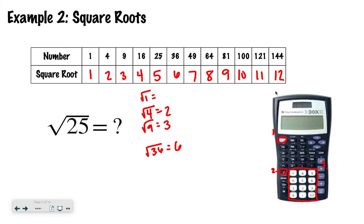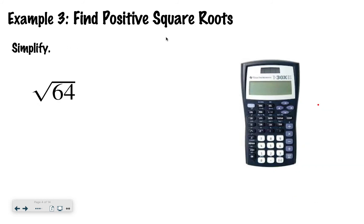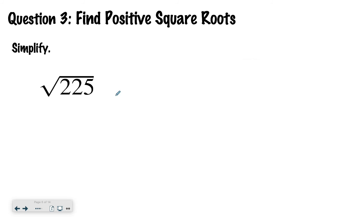So squares and square roots are opposites of each other. Now let's practice finding positive square roots. I would hit the second key, then the x-squared key, and then type in 64. When I hit enter, my calculator would tell me the number 8. That's one of the lower square roots I just know, so I wouldn't need a calculator there. But if you don't know what the square root is, use the calculator — there's a tool to help you. Now I want you to try to find the square root of 225. Hopefully you found out that the square root of 225 is 15.